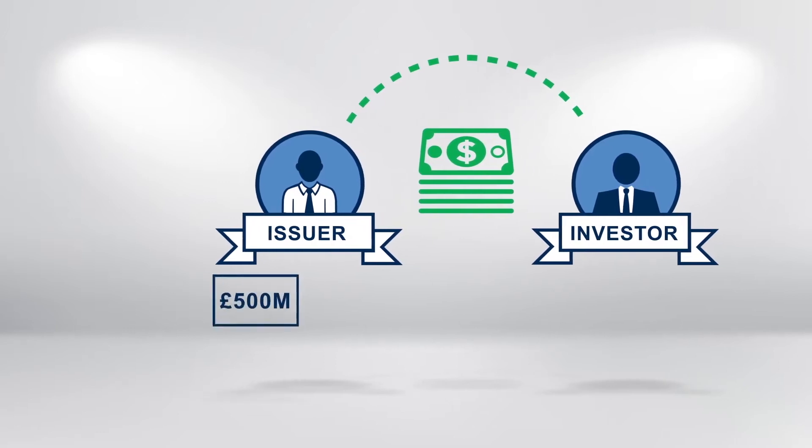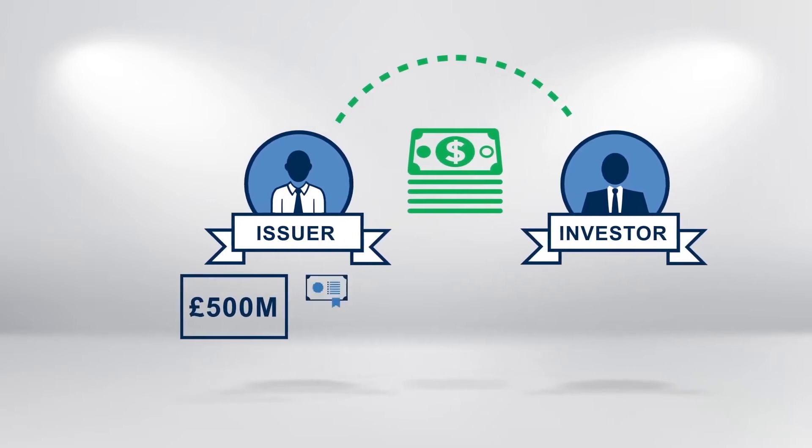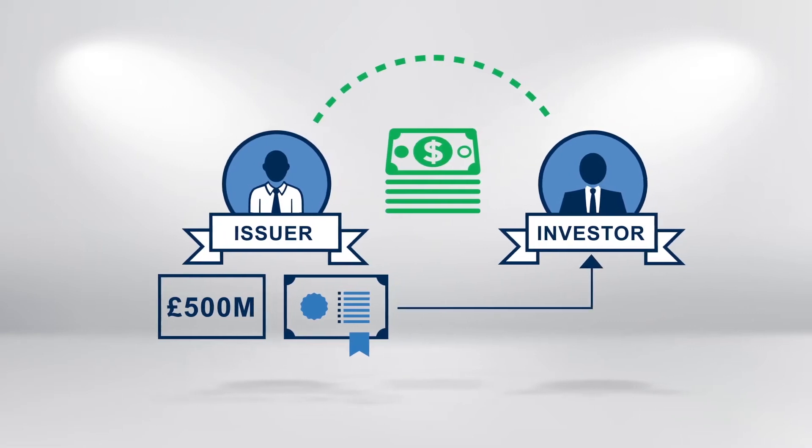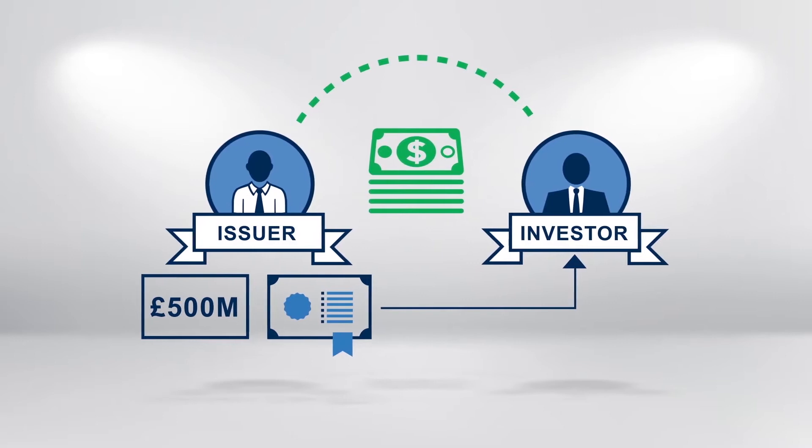So a company needs to borrow £500 million. It therefore issues a bond. Investors buy the bond, thereby loaning money to the issuer.